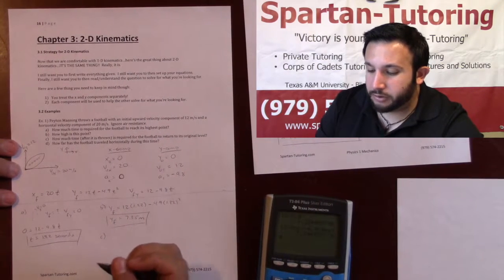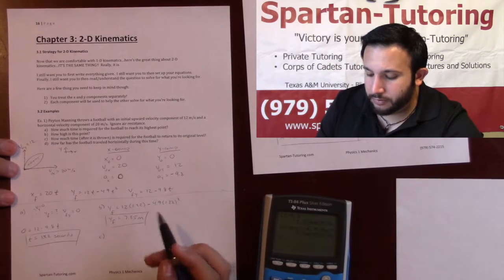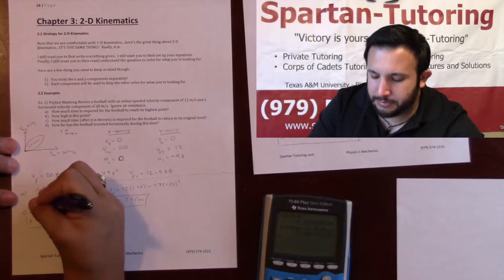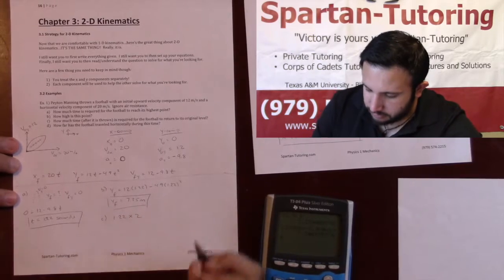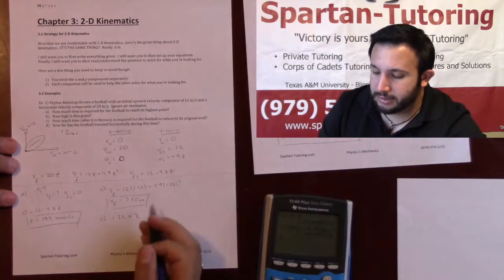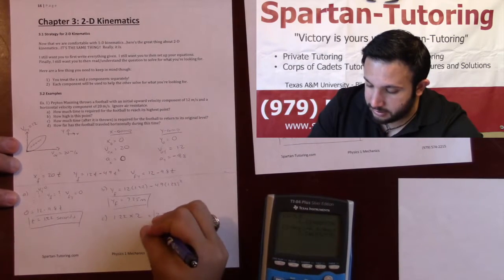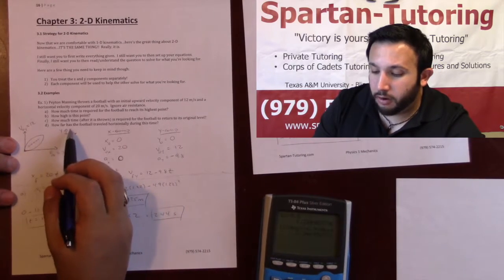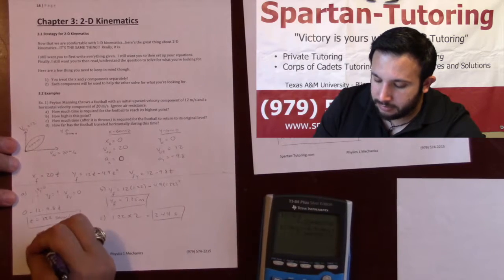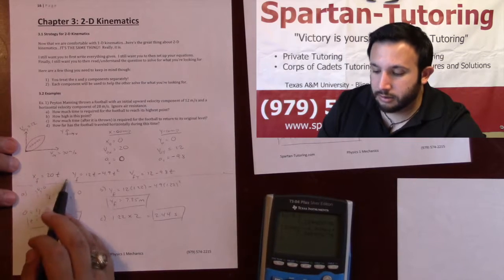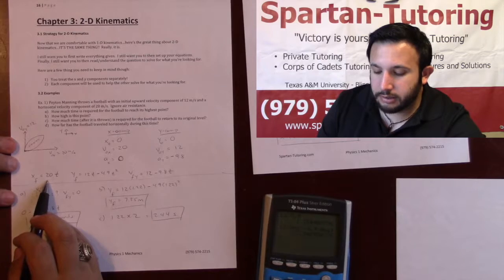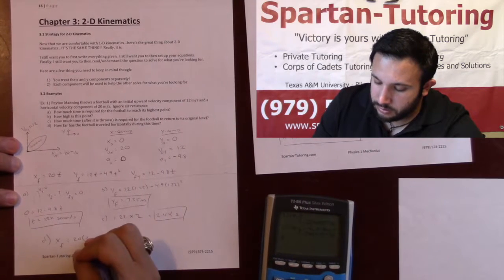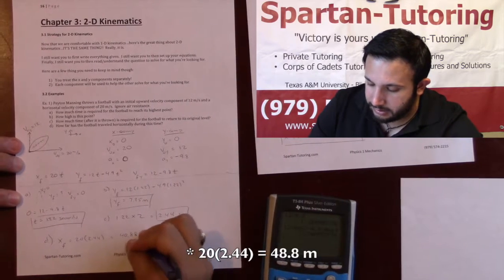Part C: how much time after being thrown is required for the football to return to its original level? As we discussed with 1D kinematics, the time to reach the highest point equals the time to fall back — so just take 1.22 seconds and multiply by 2, giving 2.44 seconds. For Part D, how far has the football traveled horizontally? I plug 2.44 seconds into the x-position equation: x_f = 20 × 2.44 = 48.8 meters.